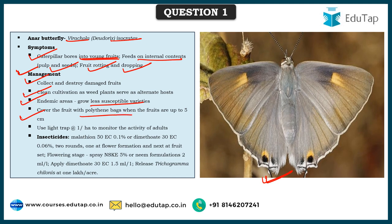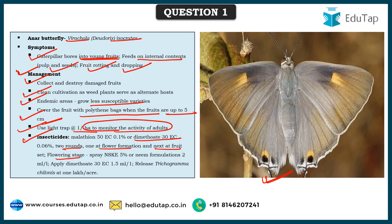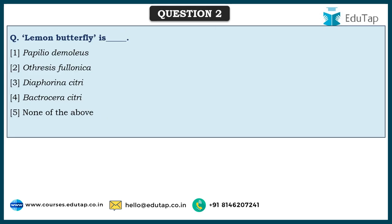Management practices include covering fruits with polythene bags when fruits are up to five centimeters, using light traps at one per hectare to monitor adult activity, or applying insecticides like malathion 50 EC at 0.1% concentration or dimethoate 30 EC at 0.06% — two rounds at flower formation and fruit set. At flowering stage, neem seed kernel extract 5%, neem formulations 2 ml/liter, or dimethoate 30 EC 1.5 ml/liter can be used. The farmer can also release Trichogramma chilonis at 1 lakh per acre as a parasitoid on eggs or larvae.